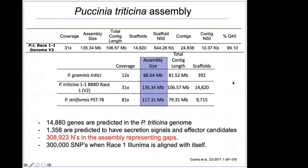Then came along the leaf rust genome. The assembly we put together is a haploid assembly — version 2 — with 31x coverage. The haploid assembly is 135 megabases, pretty fragmented with a lot of contigs. We compared that to Les's genome made using Sanger at 12x, which is 88 megabases for a haploid genome. The Puccinia striiformis PST78 genome was 117 megabases. So leaf rust is really the largest of the three. We found that about half the genome of this assembly was repetitive elements.